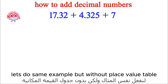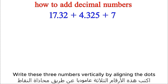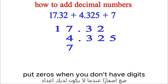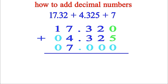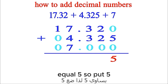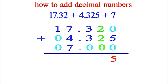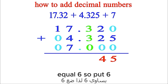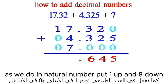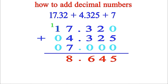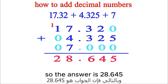Let's do the same example but without a place value table. Write these three numbers vertically by aligning the dots. Put zeros when you don't have digits. Add as if they were natural numbers, starting from right to left. Following the same steps as before, we get the same answer: 28.645.